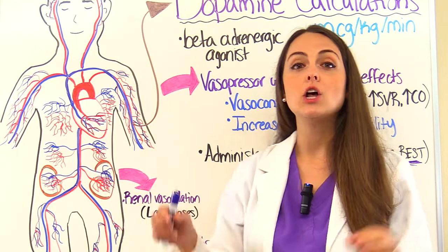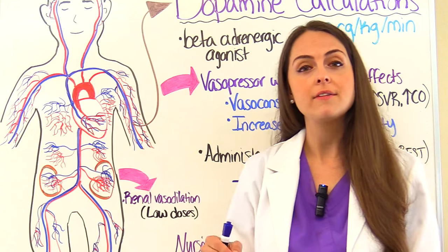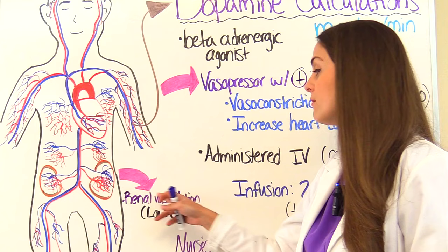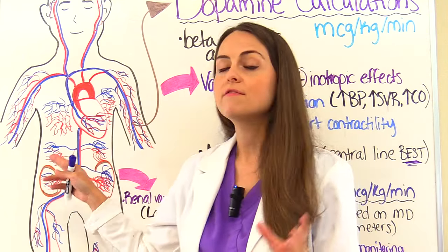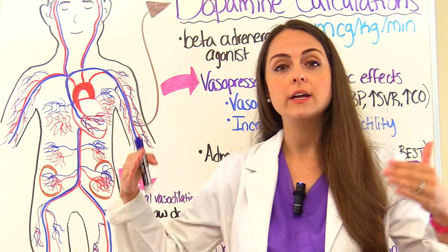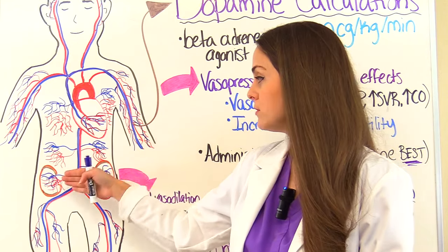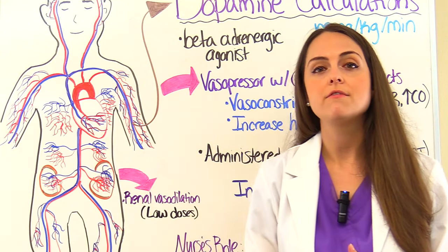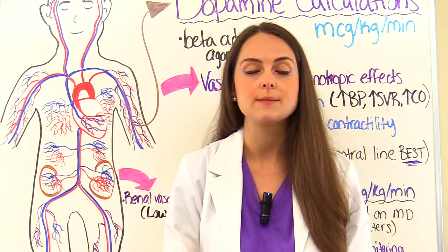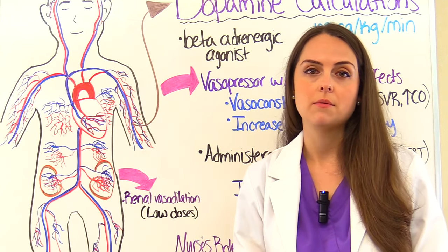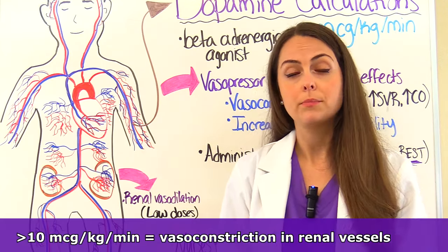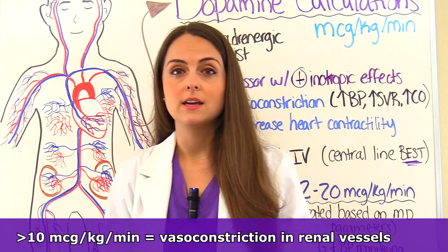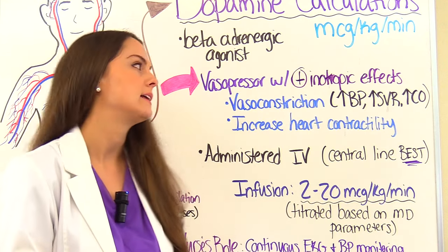In low doses — about 0.5 to 3 micrograms per kilogram per minute — dopamine can actually cause renal vasodilation. The vessels that feed our kidneys will dilate, which will increase perfusion to the kidneys and can help increase urinary output, due to the way dopamine affects those dopaminergic receptors in the kidneys. However, at high doses of about 10 micrograms per kilogram per minute, it has the opposite effect — constriction of those vessels — so only in low doses do you have the dilation.